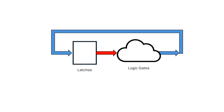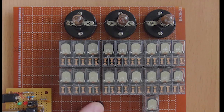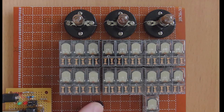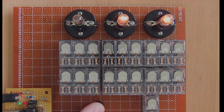Now you might be thinking that's an obscure example. But first, in complex digital systems, the path from output to input can be hidden in a cloud of logic and difficult to find. Second, this example where the Q output goes to reset and the Q-bar output goes to set can be used as the basis for an up counter. So we want our circuit to be able to handle it.